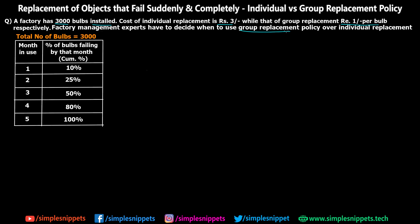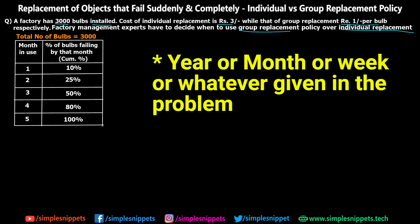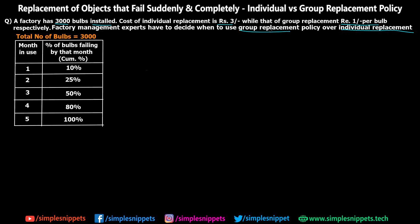They have two options: group replacement and individual replacement. If one or two bulbs fail there is no option but to perform individual replacement. However, as all these bulbs come to an expiration date, the factory management can also decide to take group replacement if it is cheaper. So we have to find out in which year group replacement should be performed and in which year it will be cheaper than individual replacement.